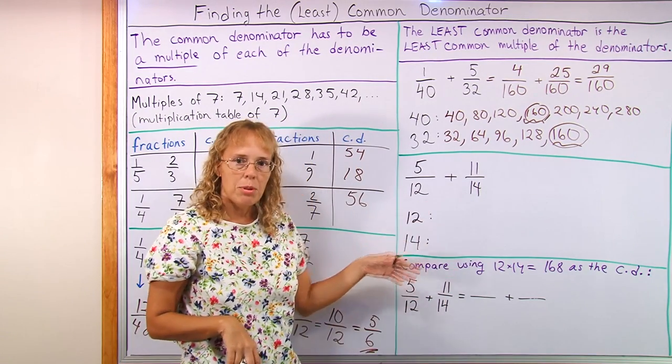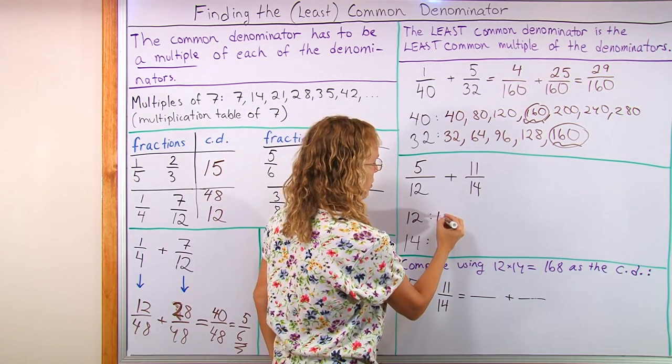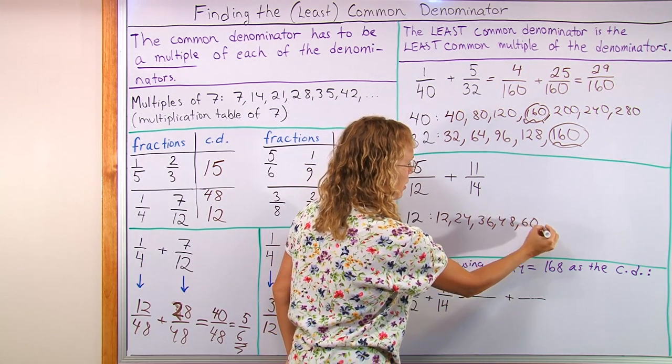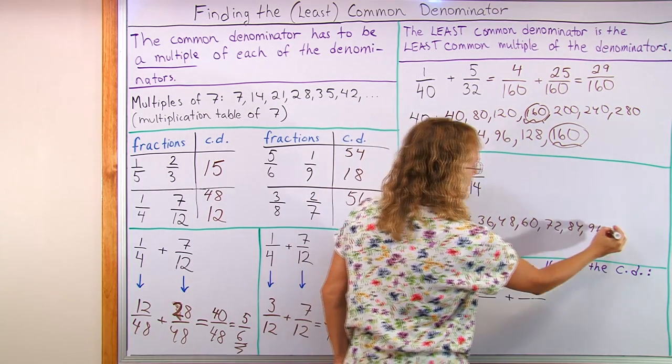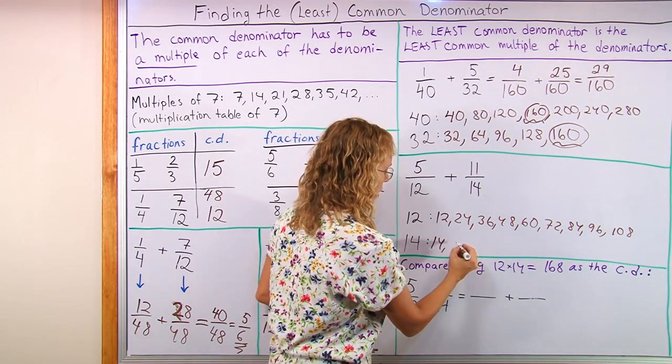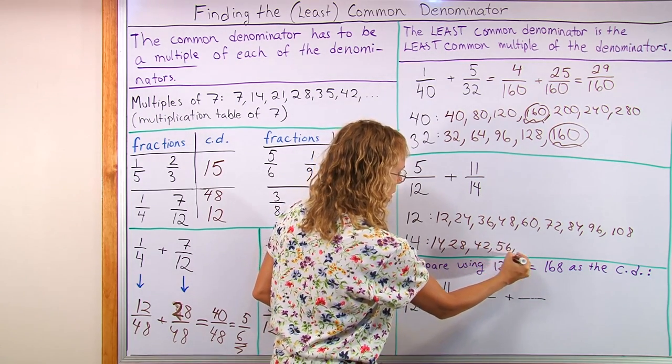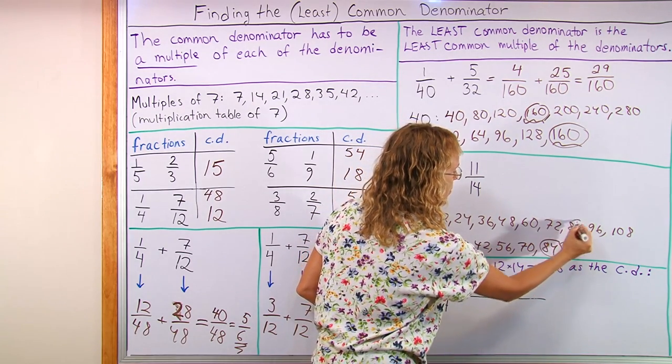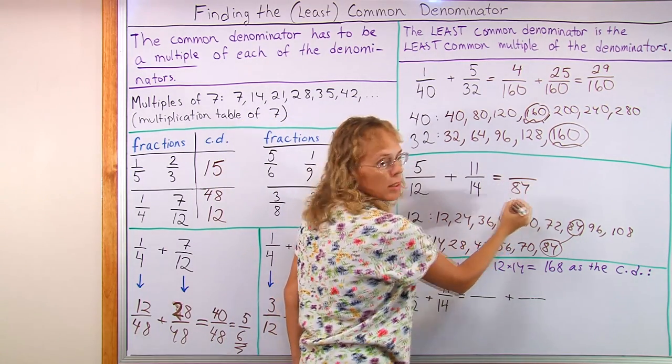Let's look at another example. I have my denominators 12 and 14 here. Multiples of 12 would be 12, 24, 36, 48, 60, 72, 84, 96. Yeah, I don't know at this point how far I need to go. Let's start with 14. 14, 28, 42, 56, 70, 84. Oh, okay. 84, here we go. And then we will write in the addition using the denominator 84.